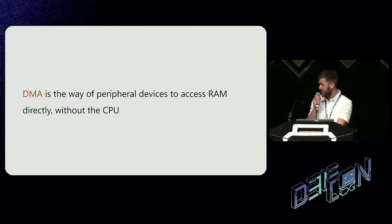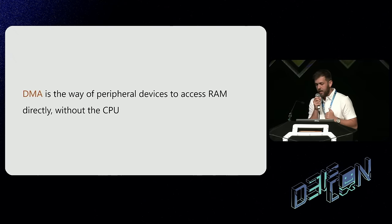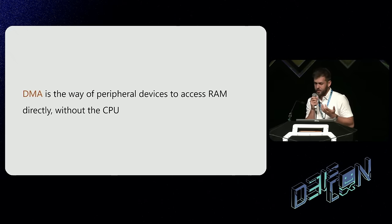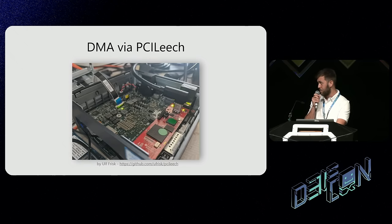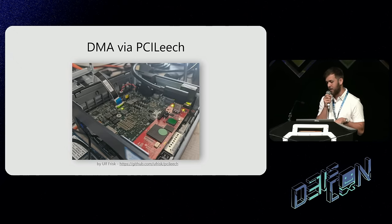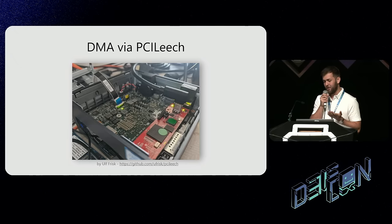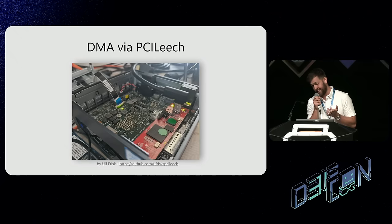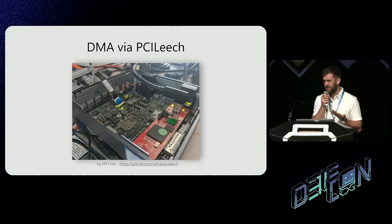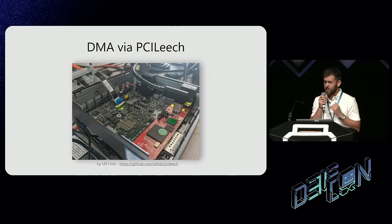The answer was DMA — Direct Memory Access — the way for peripheral devices to communicate with the CPU and operating system. Devices such as your Ethernet adapter or graphics card. To test this hypothesis, we took something called PCILeech, a cool tool by Ulf Frisk — a small red FPGA device connected through the M.2 bus. It allows you to initiate arbitrary read and write DMA transactions to RAM. Using it, we were actually able to exploit the time-of-check, time-of-use issue, which was amazing — but it requires physical access, so it could only be considered an evil maid or supply chain attack at best.